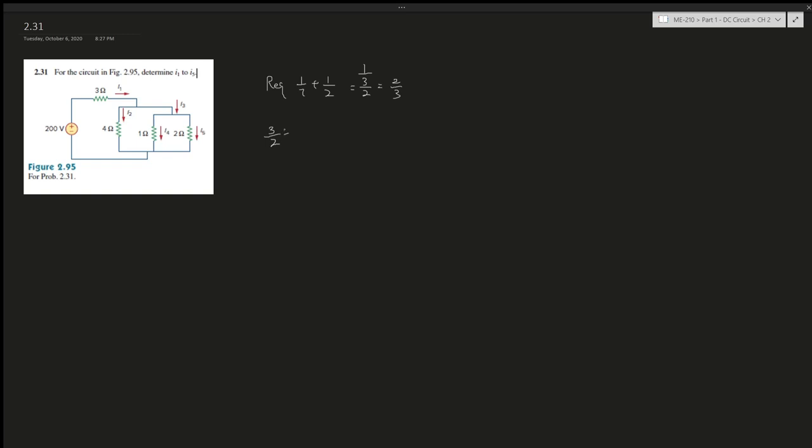So we have 1 over R plus another 1 over R for the remaining parallel section, which gives us 7/4. Taking 1 over that gives 4/7 plus 3 ohms because they are now in series. That's 21/7 plus 4/7, which equals 25/7 ohms total equivalent resistance.